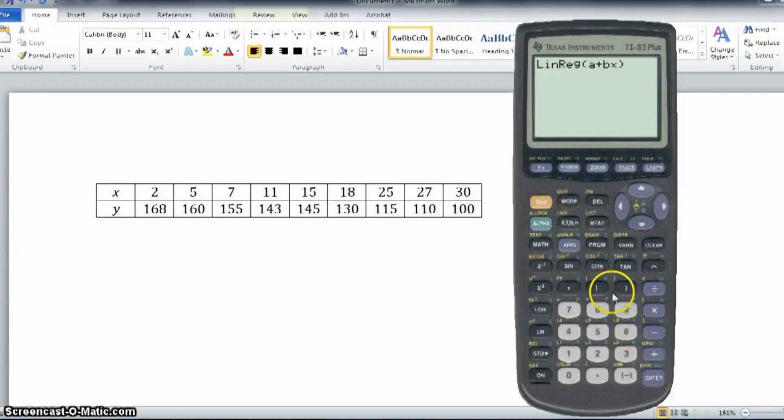Press enter, and then you want to get on to list one and list two. So, second one for list one, press comma, second two for list two, press enter.